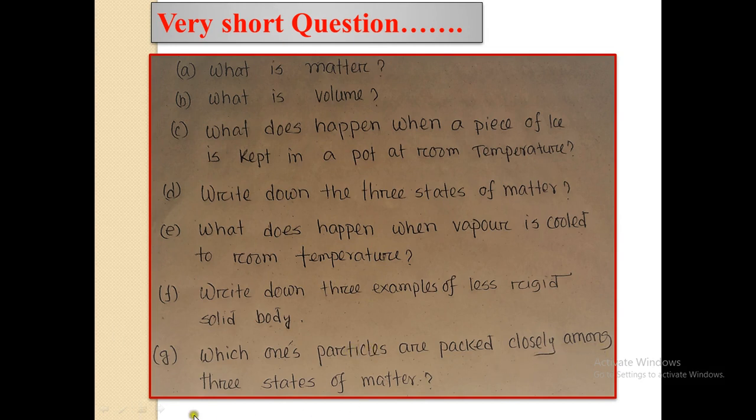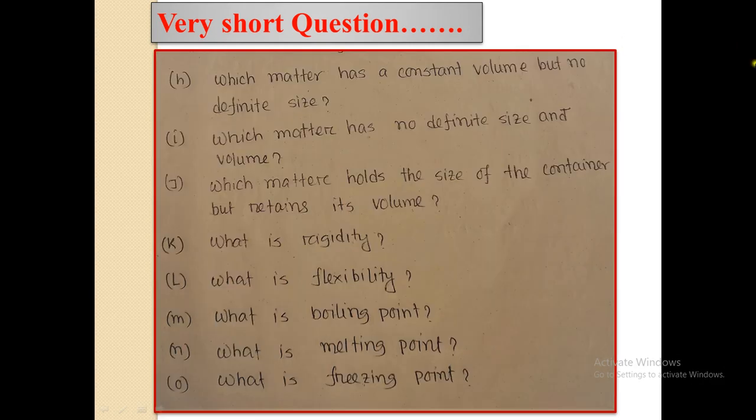Write down three examples of less rigid solid body. Which one's particles are packed closely among three states of matter? Very short questions: Which matter has a constant volume but no definite size? Which matter has no definite size and volume? Which matter holds the size of the container but retains its volume? What is rigidity? What is flexibility? What is boiling point? What is melting point? What is freezing point?